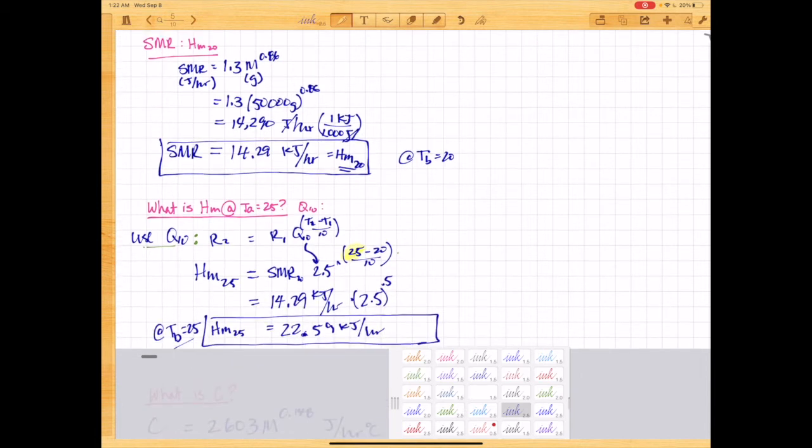We get a metabolic rate at 25 is 14.29 times 2.5 raised to the 0.5 power, because that's 25 minus 20 over 10. And that gives us a metabolic rate at 25 of 22.59 kilojoules per hour. So by going up 5 degrees Celsius, we have really increased the metabolic rate from 14.29 to 22.59. That's about a 1.6 factor increase. So this small difference in temperature gives us a huge boost in metabolism. So that's another reason why we want to account for these things when we're looking at the metabolism of ectotherms.